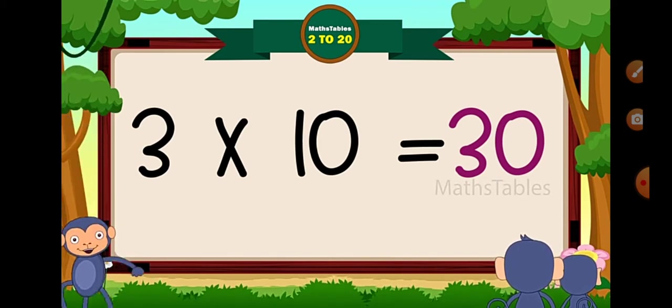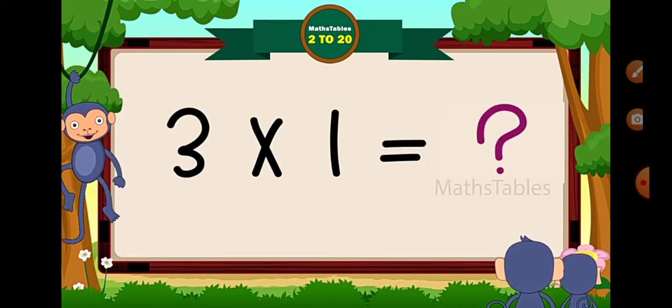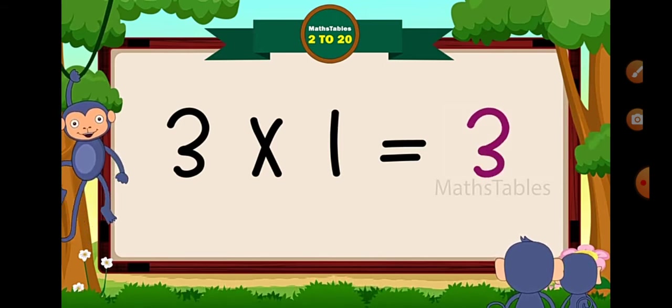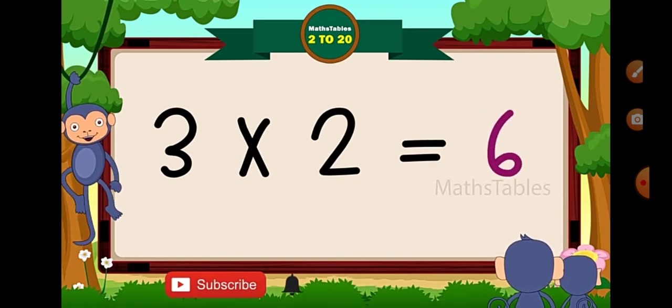Let's revise once again. 3 table. 3 × 1 = ? Yes, 3. Now, 3 × 2 = ? 6.